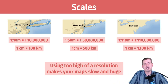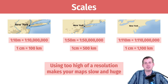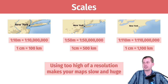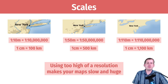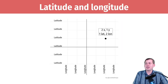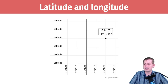You want to choose the scale appropriate to what you're doing. Too high a resolution makes your map slow and huge and hard to work with. The Census Bureau also offers different scales, so pay attention when looking at shape files — make sure you get the right level of detail. The only way to figure that out is to plot it and see if it looks too jagged or too smooth.